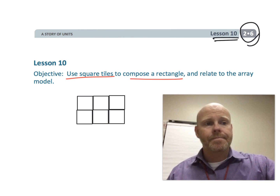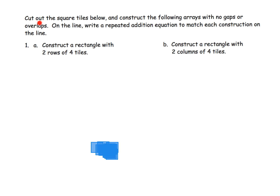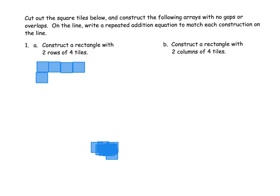The directions say to cut out the squares below and use them to construct this array. This is two rows of four tiles — the idea is two rows of four tiles without any gaps. Going quickly, it's going to look like this. There we go: two rows of four tiles.